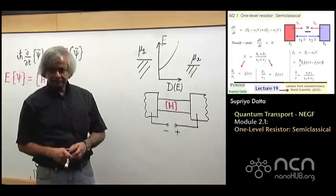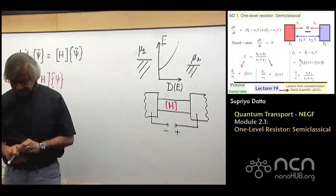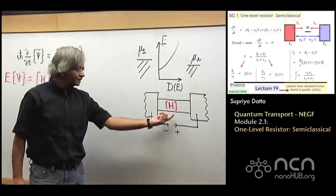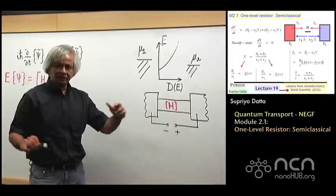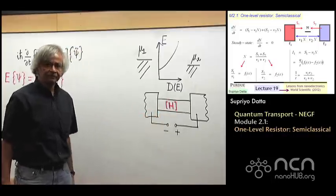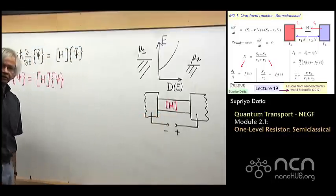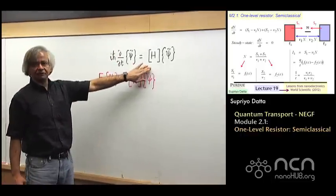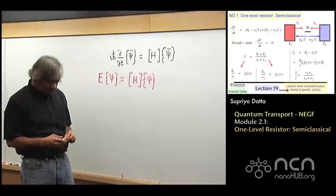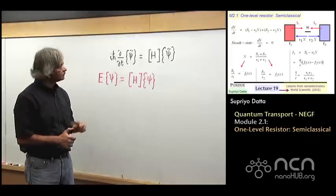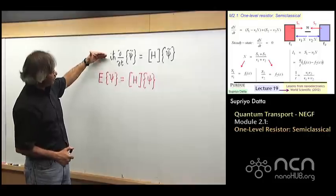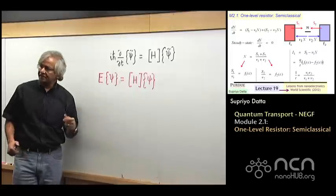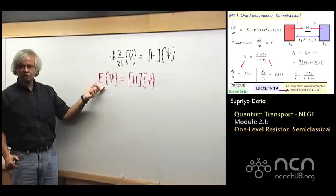Now the first step, of course, to describing any resistor is a good description of the channel, and that's this H matrix, or technically what you call the Hamiltonian matrix. And what I tried to get across in week one of this course was how one writes down that H matrix. The starting point is this Schrödinger equation, and if you recall, we had these two versions. One is the time-dependent Schrödinger equation, and the other is the time-independent Schrödinger equation.